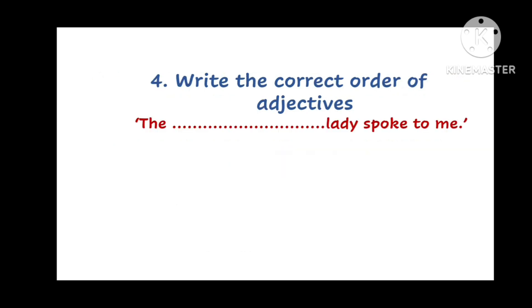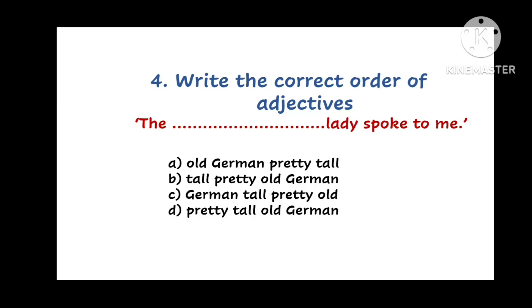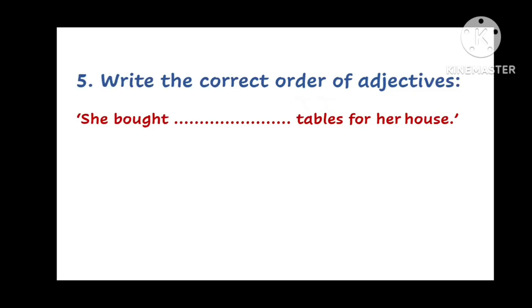Question 4. Write the correct order of adjectives. The dash lady spoke to me. And the options are A. Old German pretty tall. B. Tall pretty old German. C. German tall pretty old. Or D. Pretty tall old German. You have to fill the correct order.